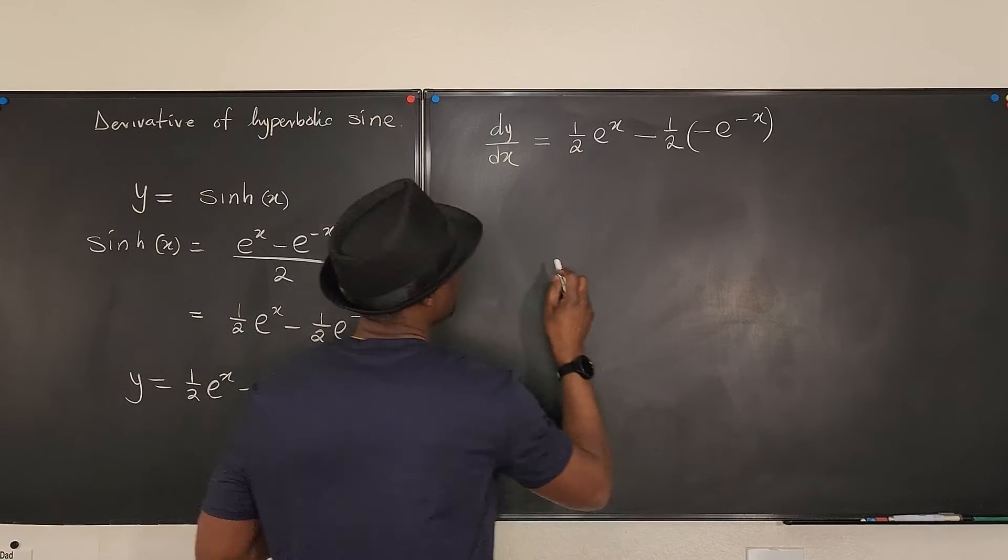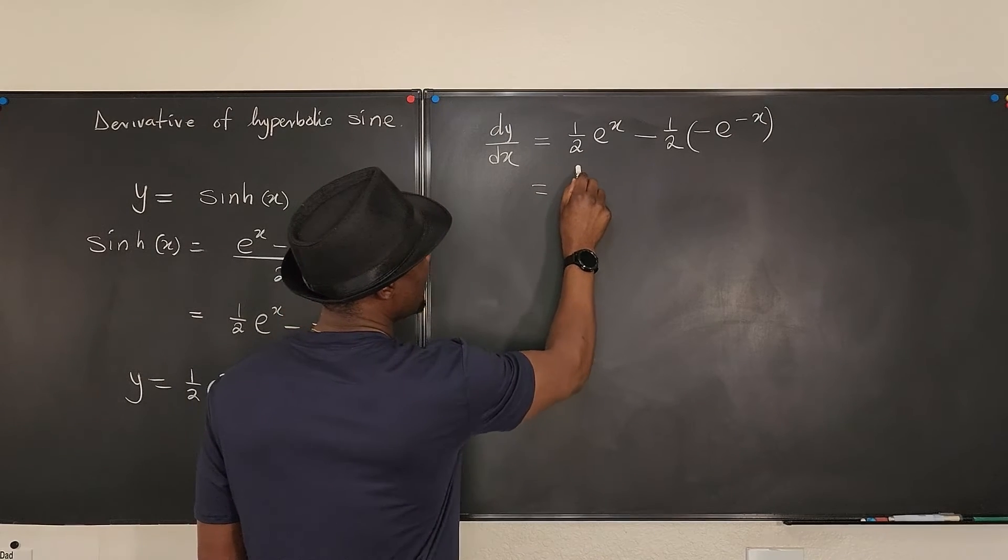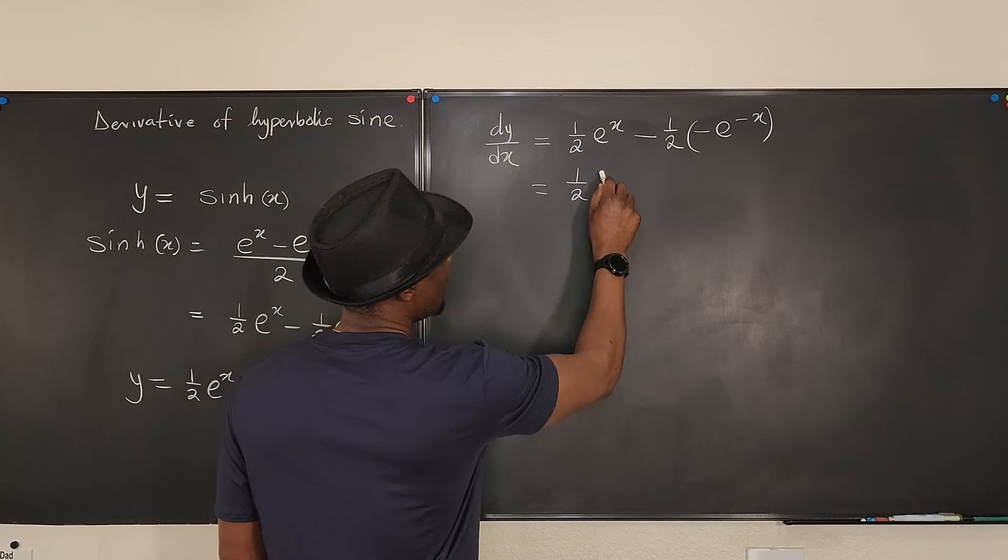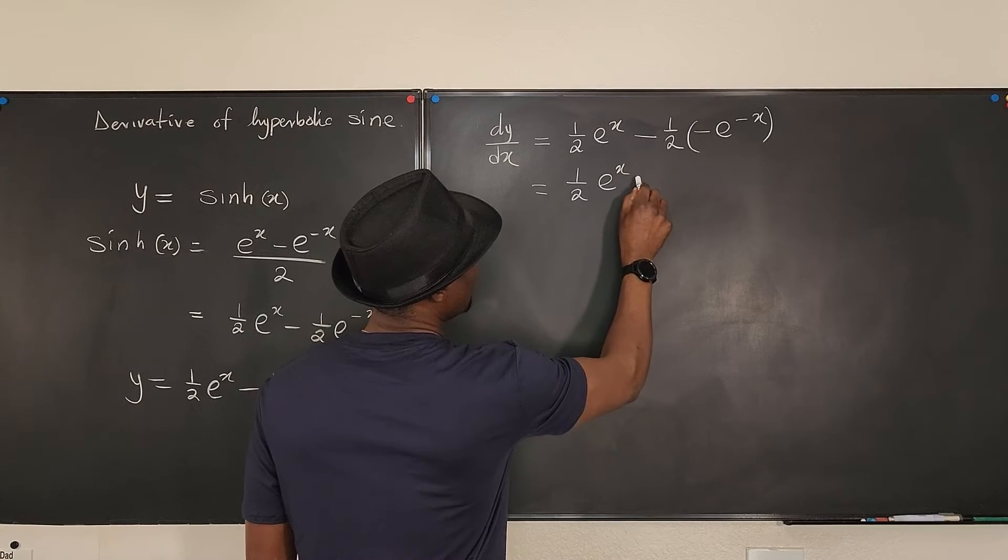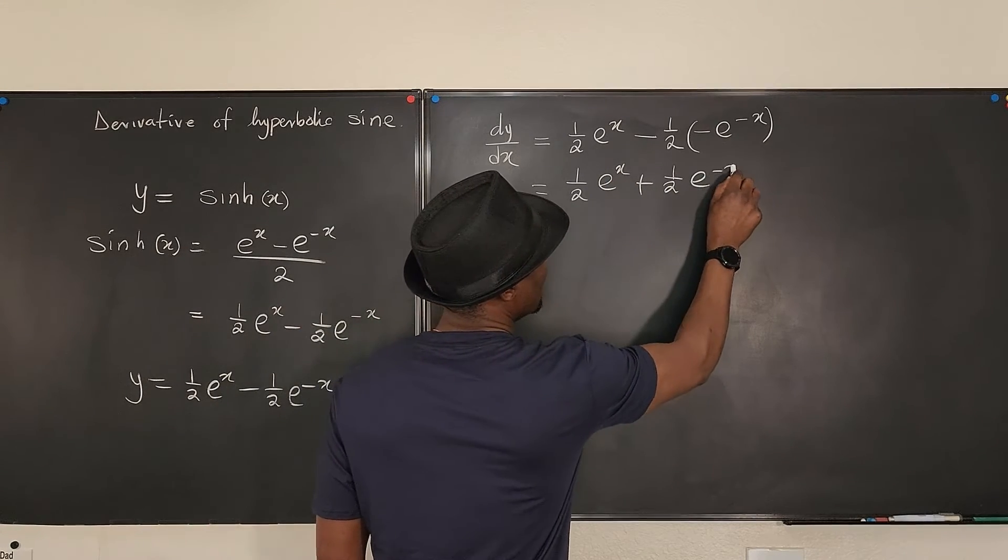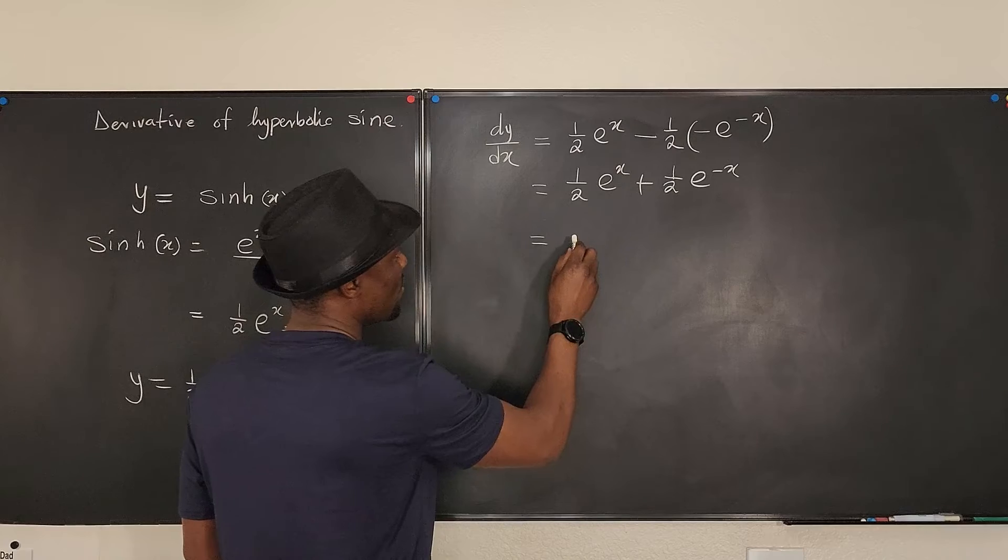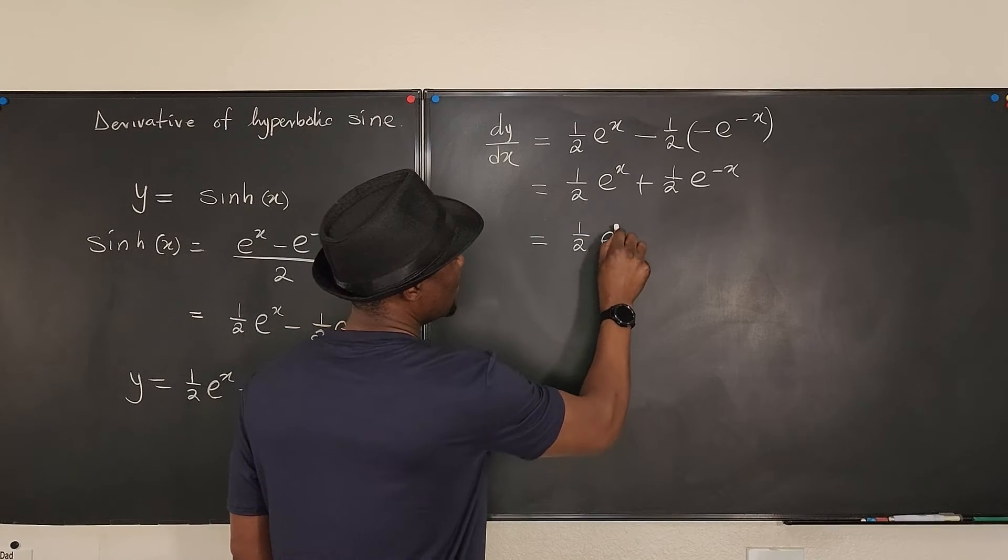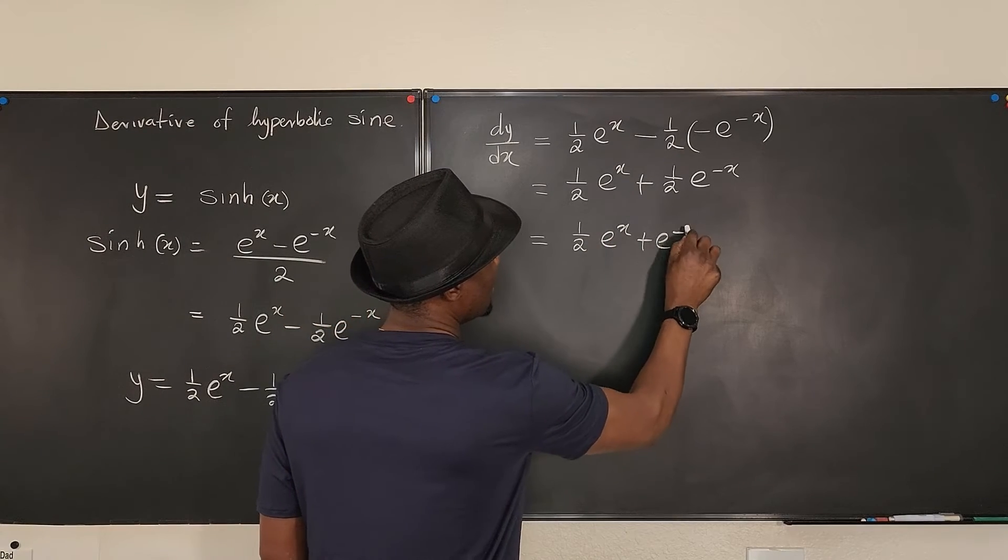Let's clean this up. I'm going to pull out the one half. Let's write e to the x, and this is going to be plus one half e to the negative x, which is equal to one half of e to the x plus e to the negative x.